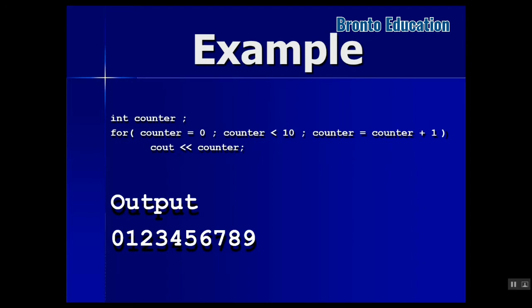For example: integer counter; for counter equals 0, counter less than 10 — that's 0 to 9, just 10 times — and counter++ or counter equals counter plus 1. Then cout counter. Each time it will print the counter value: first it prints 0, then 1, then 2, and so on.